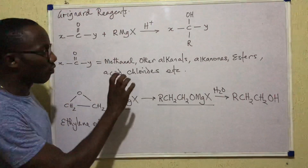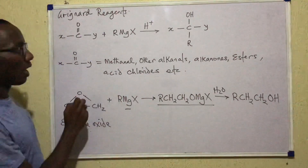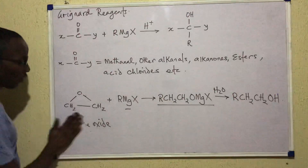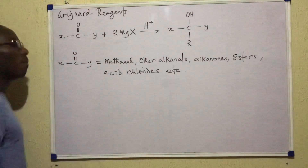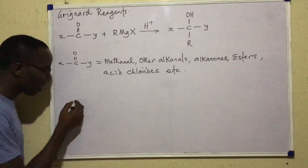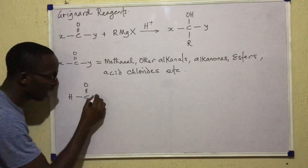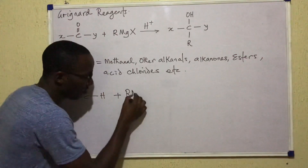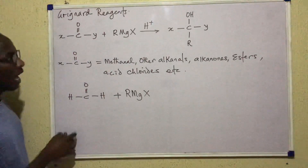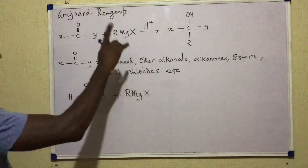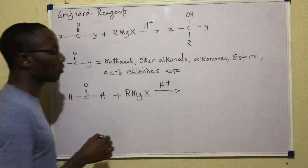This ethylene oxide case is special and different from the general cases. Now let's write equations for the reaction between all the other reagents and the Grignard reagent. Starting with methanal, written as H-C=O-H. If it reacts with a Grignard reagent RMgX, note that this reaction is acid-catalyzed — that's why there is H⁺, a mineral acid catalyzing the reaction.